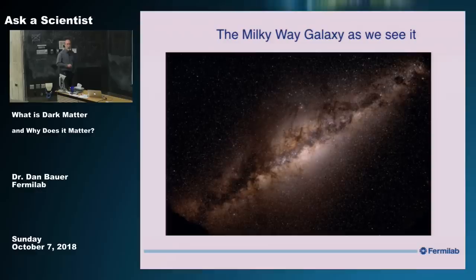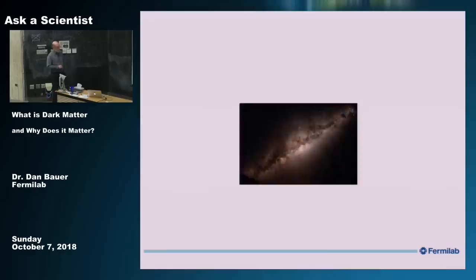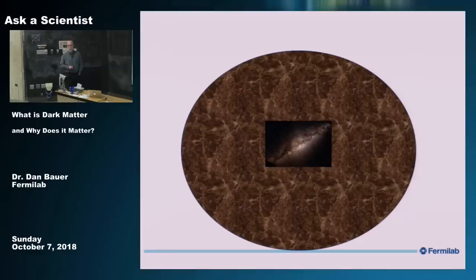If you apply that locally, the Milky Way galaxy as we see it with telescopes is embedded in a huge cloud of dark matter — because the rotation curve shows there's a lot of mass, and because we believe dark matter was the seed that drew in the normal matter that formed the galaxy.